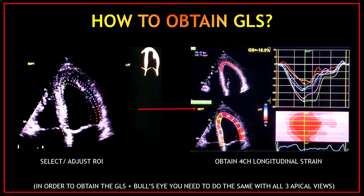One more time, the artificial intelligence will automatically recognize the view and select the region of interest. It's always good practice to check that you have the correct view and that the region of interest is being tracked appropriately. If you are not happy, you can always adjust it manually. Once happy, click the process button. Now we have the four-chamber longitudinal strain — this is the last piece needed to get the global longitudinal strain and the bullseye.